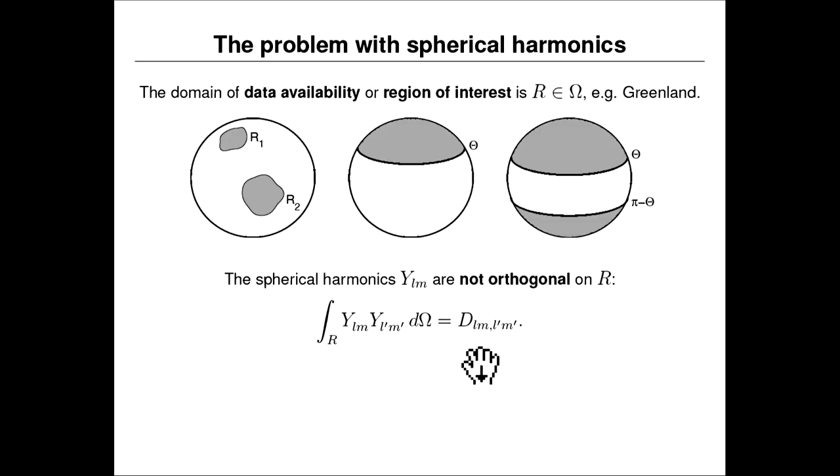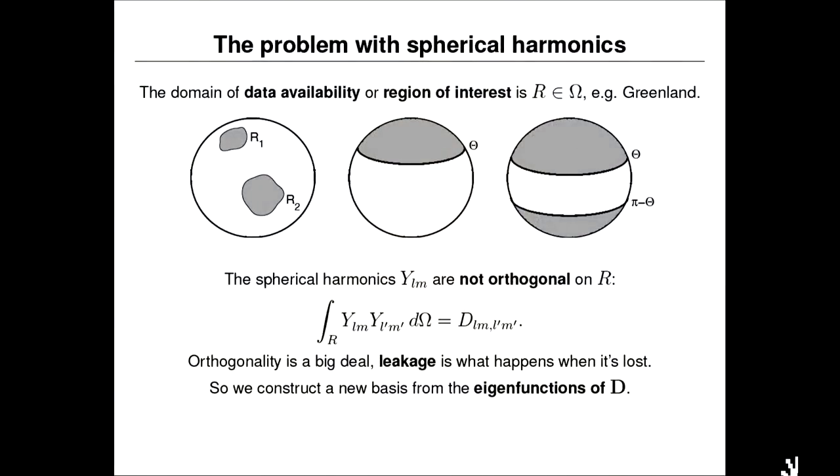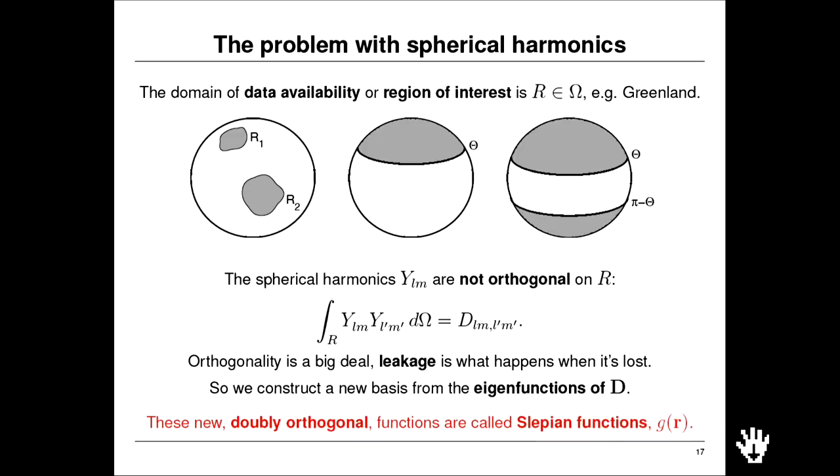When we integrate two spherical harmonics over a limited area, we no longer get the Kronecker delta structure — we get a non-diagonal operator. But what we can do is take that operator and find its eigenfunctions. When we do, we again get an orthogonal basis that is suitable both for the limited region and for the entire globe. Those new functions — underlying a lot of our work over the last decades — are called Slepian functions. Given the symbol G, they live on a sphere and are linear combinations of spherical harmonics that optimally target a specific spatial area of the globe and a particular spectral range of interest.